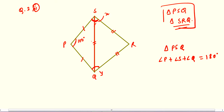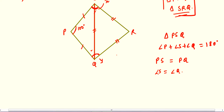In triangle PSQ, sides SP and SQ are equal. So the angle opposite to Q is S, and the angle opposite to S is Q. That means angle S and angle Q are both equal. I am assuming this angle is A, so this will also be A because both are equal. Now put the values into the angle sum property.